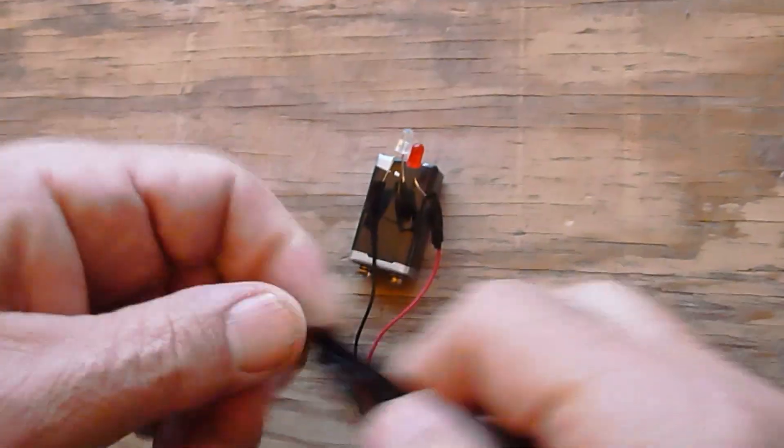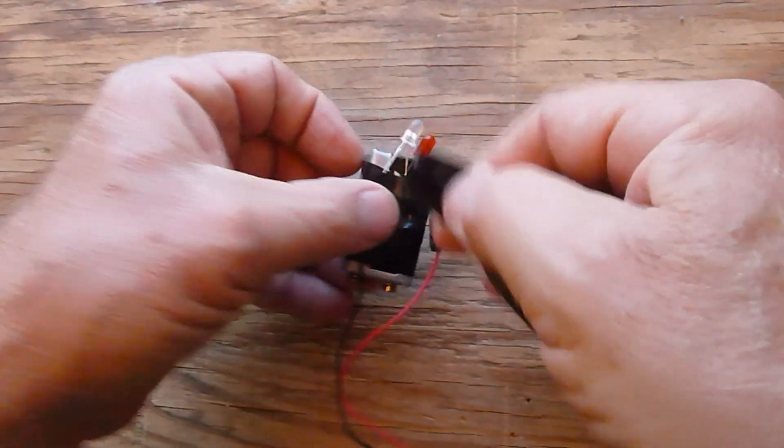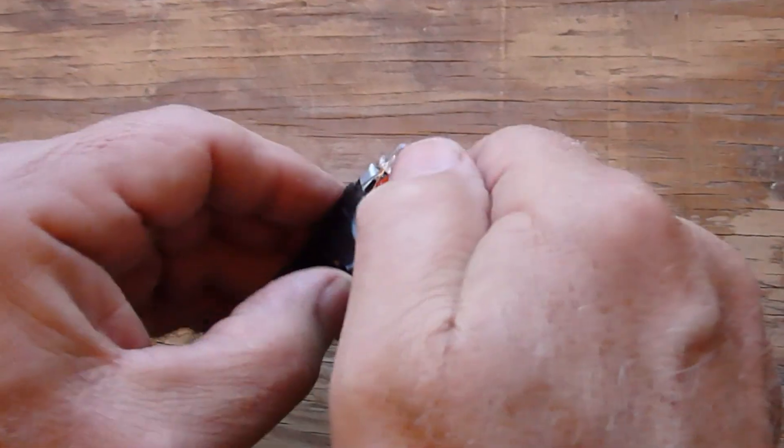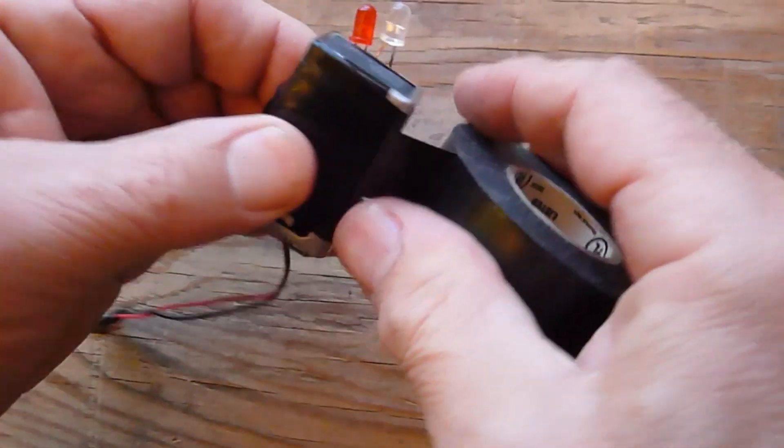This circuit uses very little current, and if you use it as directed, an alkaline 9-volt battery should last for years.